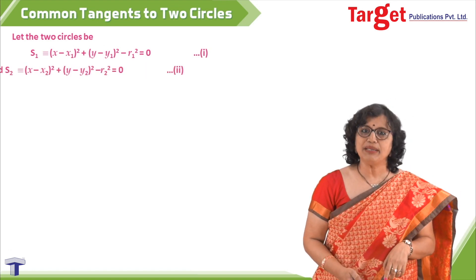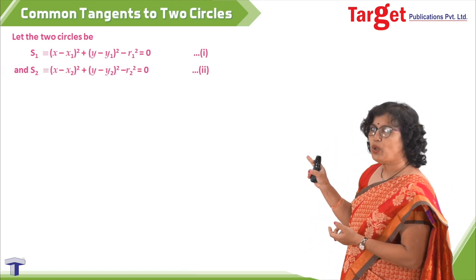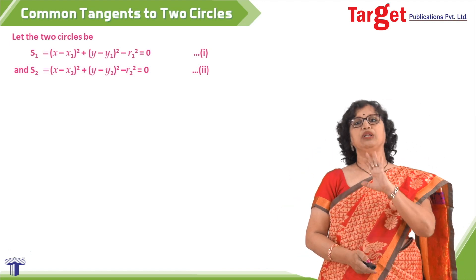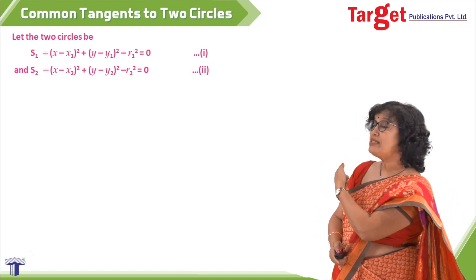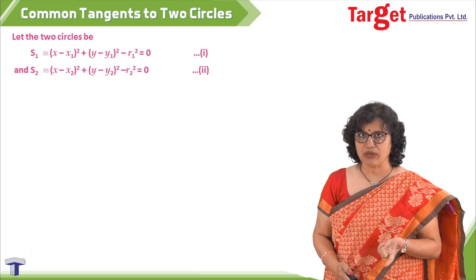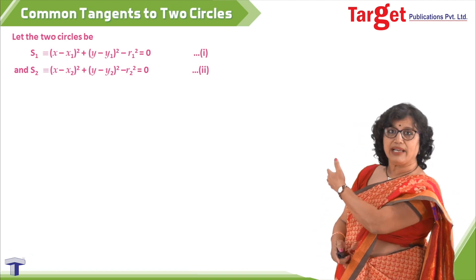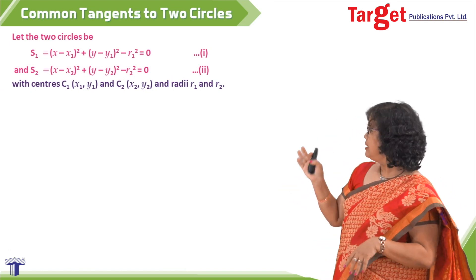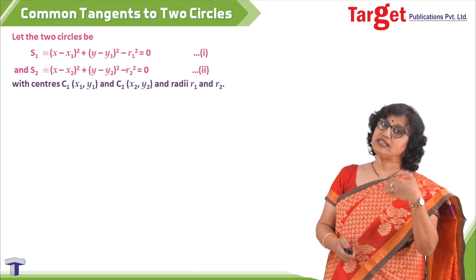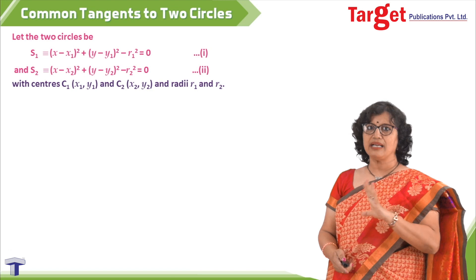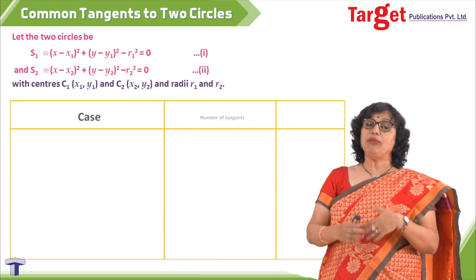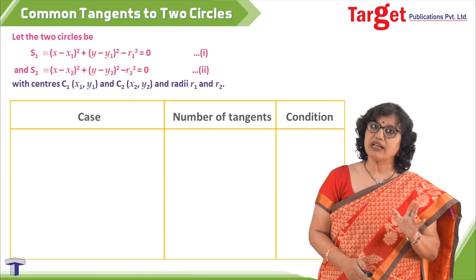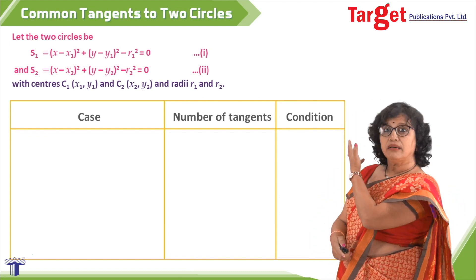Similarly I take the other circle as s2: x minus x2 whole square plus y minus y2 whole square minus r2 square equal to 0. The center of the first circle is x1, y1 and the second is x2, y2 with respective radii r1 and r2. I name them c1 and c2. We may have different cases when talking about common tangents, and we will count the number of tangents in each case along with the required condition.